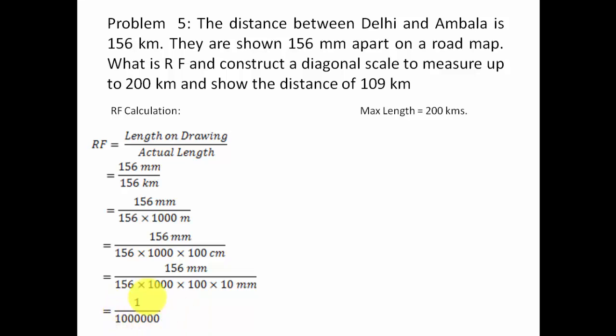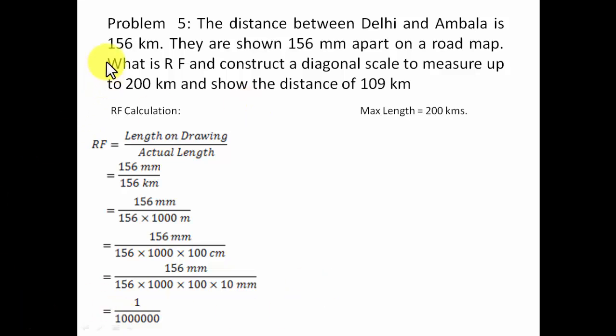So the RF is 1/10^6. To understand this figure: the original distance between these two cities is 156 kilometers, which has been shrunk by 10 lakh times so that it fits on a roadmap in the form of 156 millimeters. That's the relevance of a representative fraction.